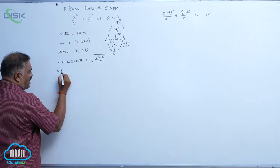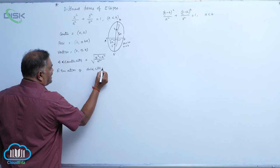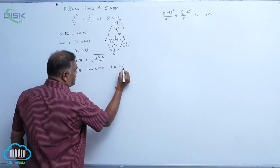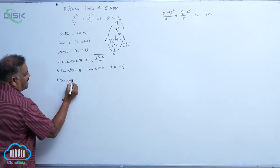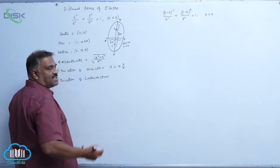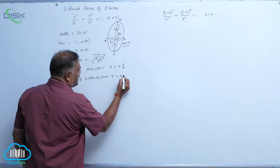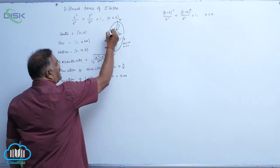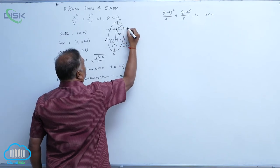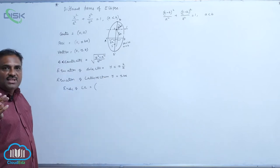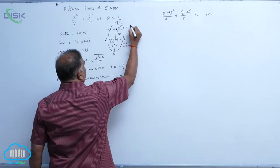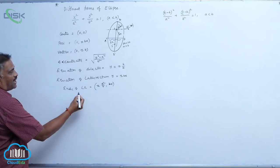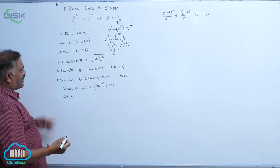Equation of directrix is given by: previously it is x = ±a/e; now it is y = ±b/e. Equation of latus rectum is given by: previously it is x = ±ae; now it is y = ±be. Ends of latus rectum: observe that these are the ends. This is (0, be), so on a horizontal line, the x-coordinates will change and y-coordinates will be constant, that is be. This gives ±a²/b, so the ends are (±a²/b, be).